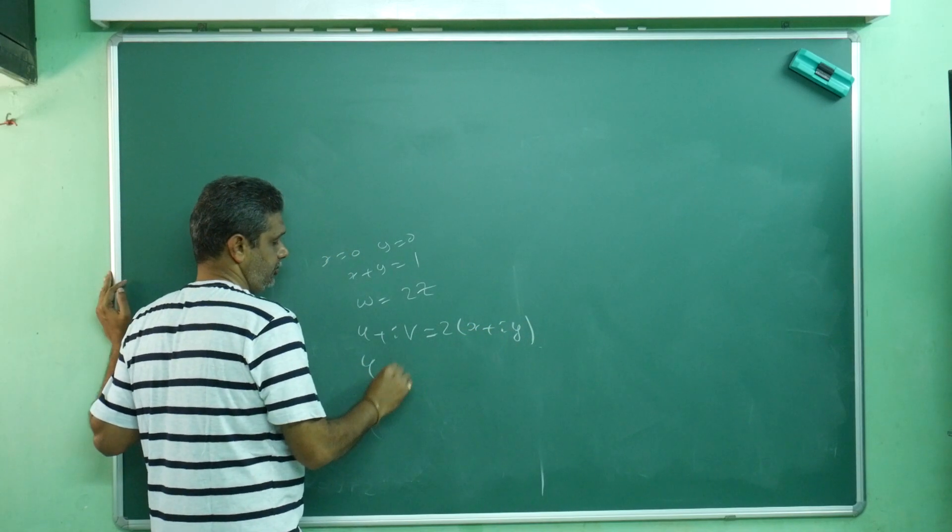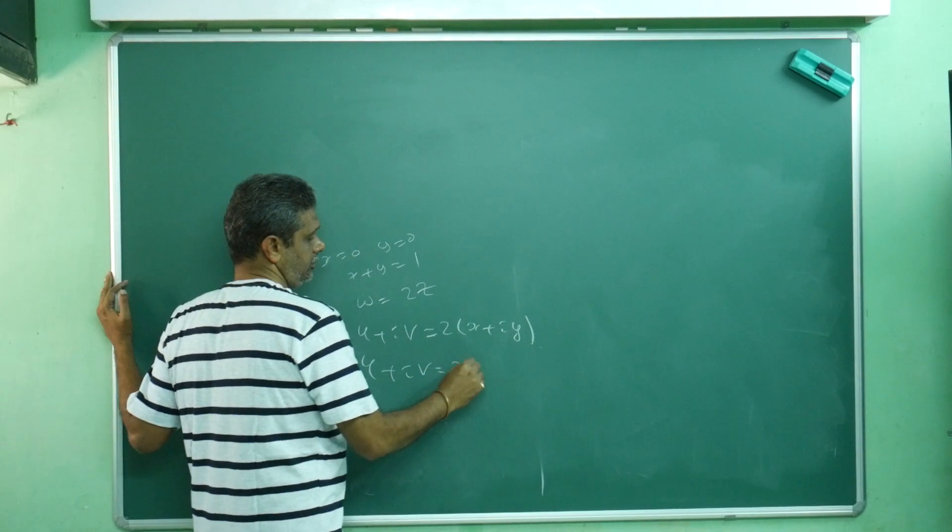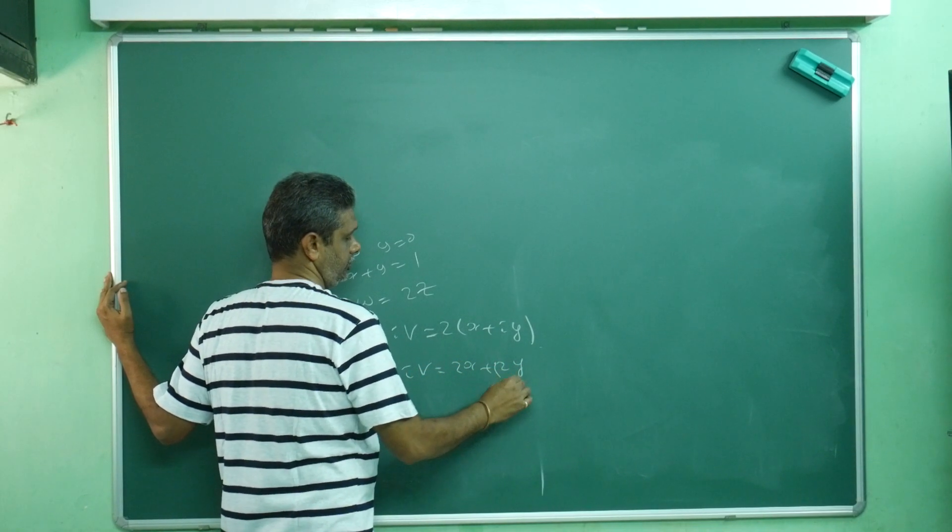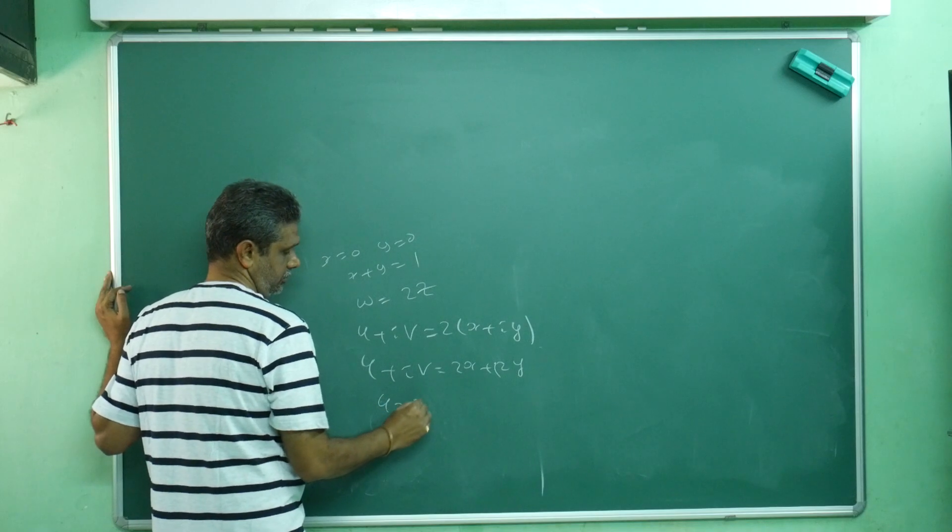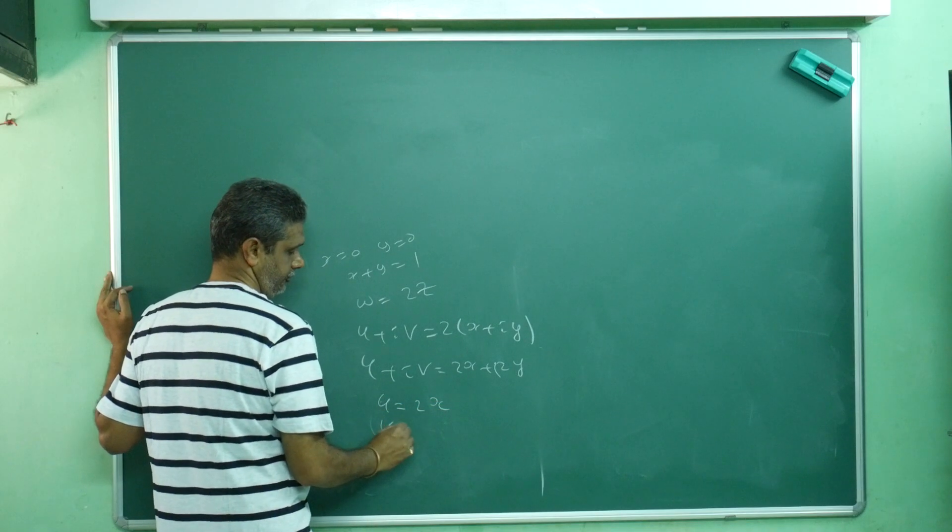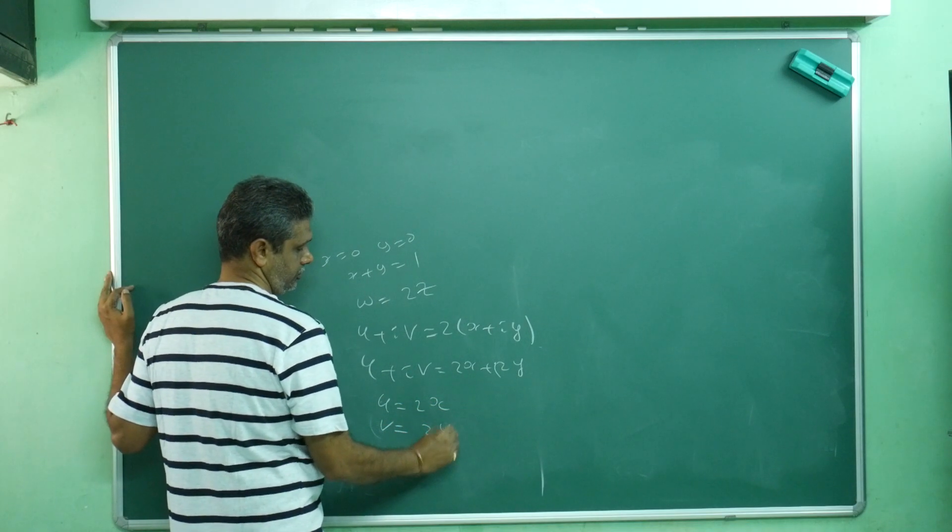So this is u + iv = 2x + 2yi. Therefore, u = 2x, v = 2y.